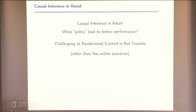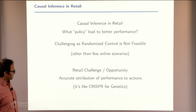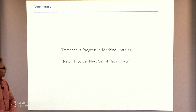I feel it's almost like CRISPR for genetics — where you can knock out each piece of DNA precisely. Now that data is getting collected in a much better way and everybody's open about it, if I were to talk about where the next goalposts for machine learning are, retail is definitely a candidate. With that, let me stop. Thank you.